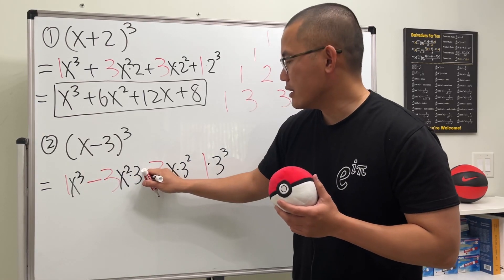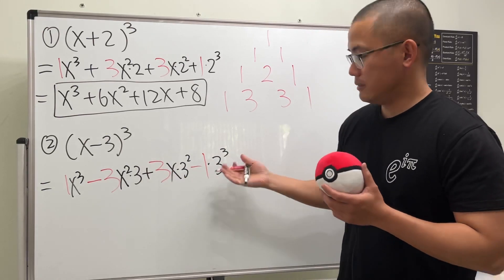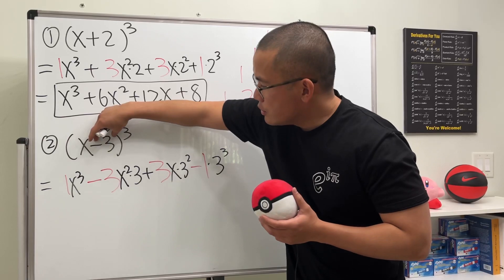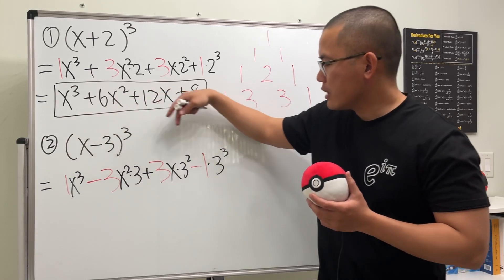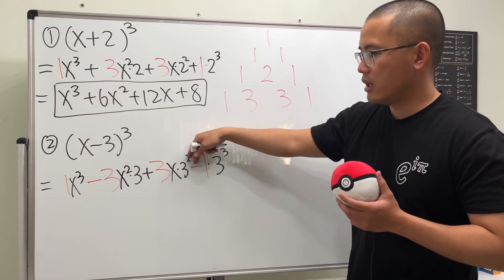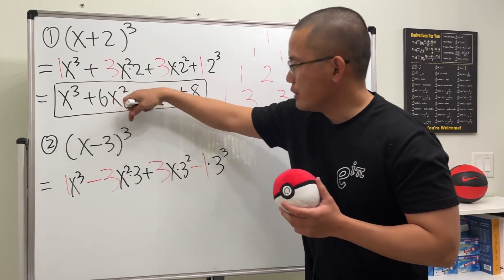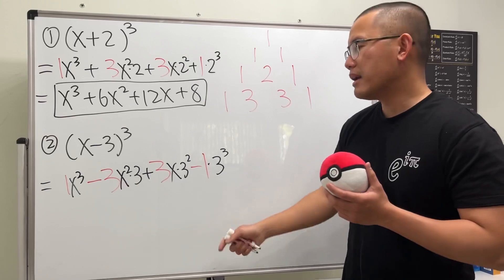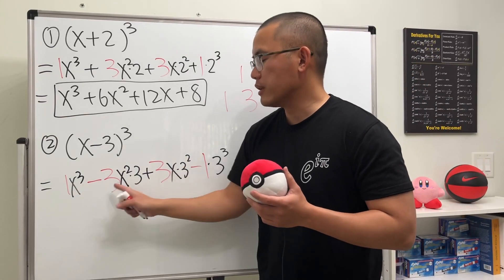So plus and then minus just like that. Why though? Well, if you take negative 3 to the third power that will give you negative, that's why. Negative 3 to the second power is positive. Same thing, but I think the quick way to do it is just make sure you alternate the signs like this.